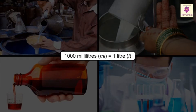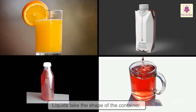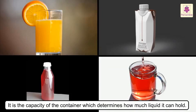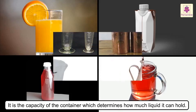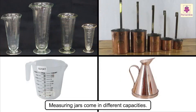1000 millilitres is equal to one litre. As liquids take the shape of the container, it is the capacity of the container which determines how much liquid it can hold. Measuring jars come in different capacities.